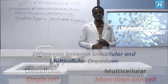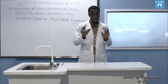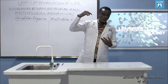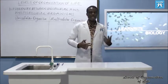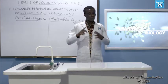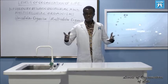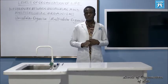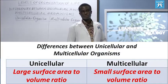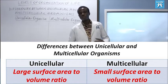What about surface area to volume ratio? This is different from size. A particular organism may be relatively larger than another, but in terms of surface area to volume ratio it may be different — it may have a smaller surface area to volume ratio, or vice versa. Surface area to volume ratio is large in unicellular organisms and small in multicellular organisms.